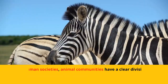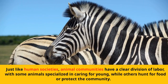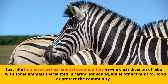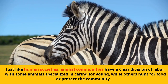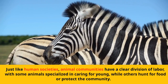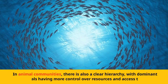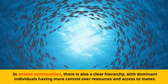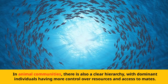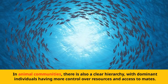Just like human societies, animal communities have a clear division of labor, with some animals specialized in caring for young, while others hunt for food or protect the community. In animal communities, there is also a clear hierarchy, with dominant individuals having more control over resources and access to mates.